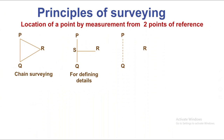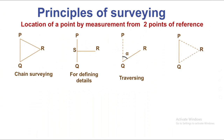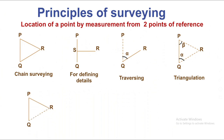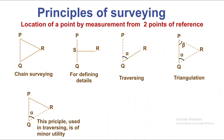PMQ is the reference point. Using angle alpha, we can locate point R from Q. PQ is the distance — this is the traversing method. Alternatively, PMQ is the reference point; if we locate point Q, we can measure the angle and see the intersection point R using angles. This is the intersection method — PQ is the reference and we measure the angles.